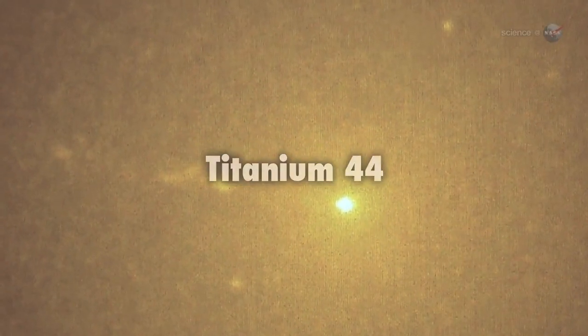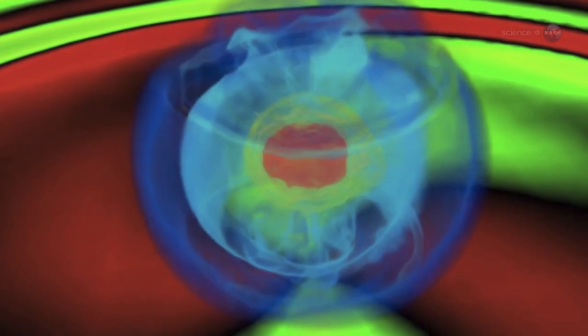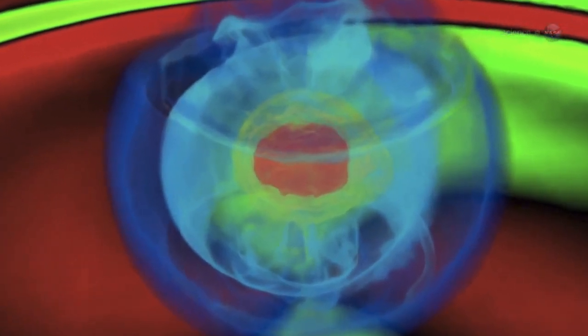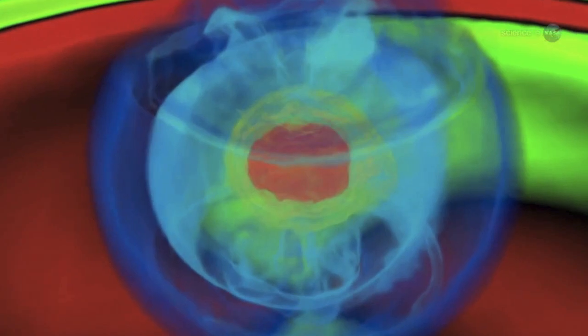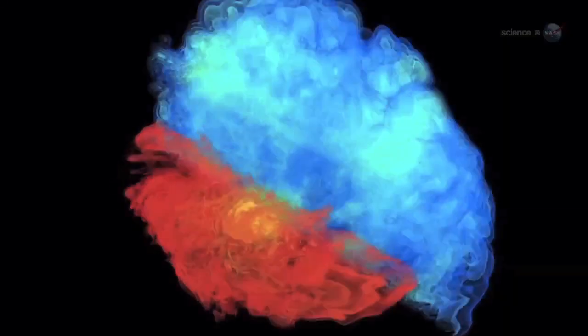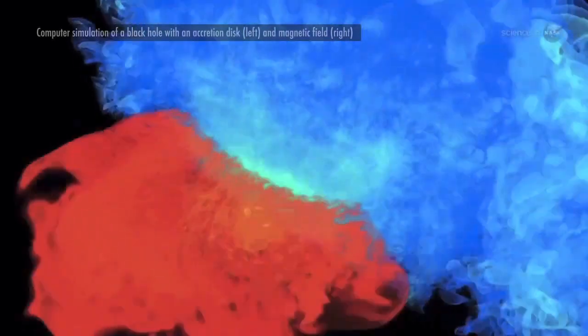An element of particular interest is titanium-44. Creating this isotope of titanium through nuclear fusion requires a certain combination of energy, pressure, and raw materials. Inside the collapsing star, that combination occurs at a depth that's very special.